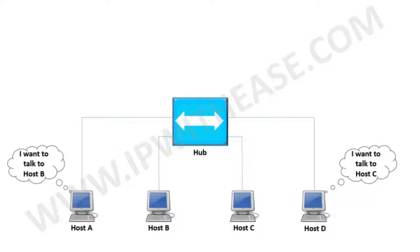Let's understand the concept of collision domain and how a hub handles a collision. In this scenario, we have 4 desktop machines — host A, host B, host C, and host D — which are connected to a common hub.